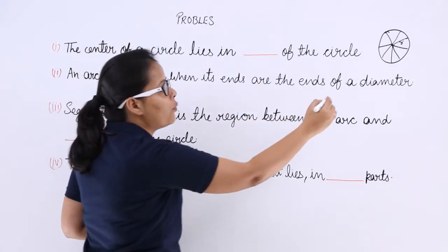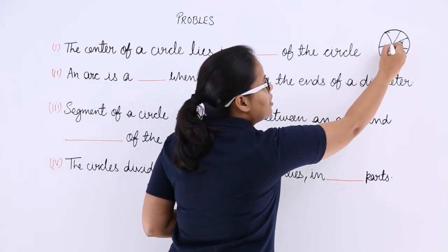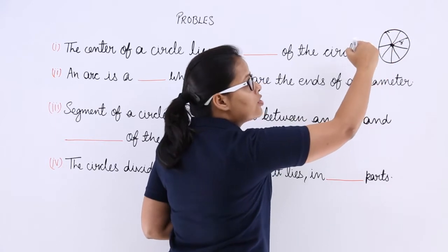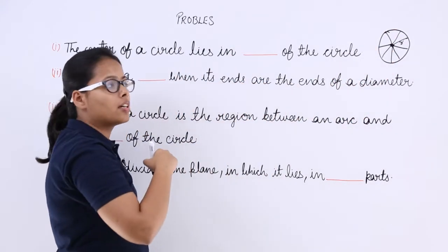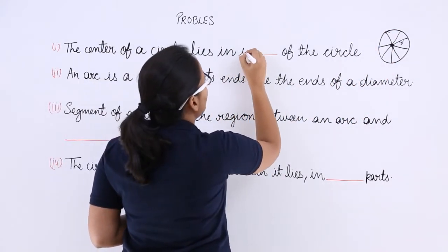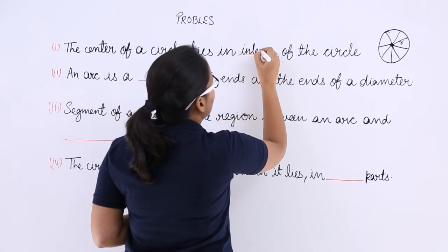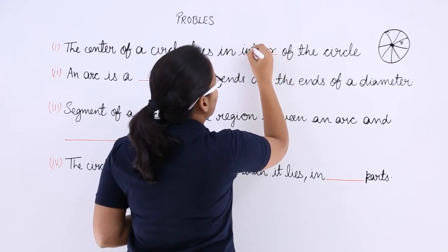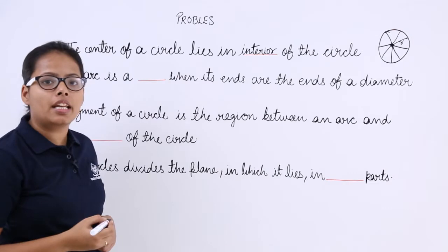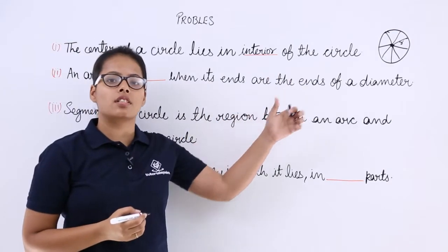So you can see here where is the center lying? The center is lying inside of this circle which means it lies in the interior. It lies in the interior or inside of this circle.